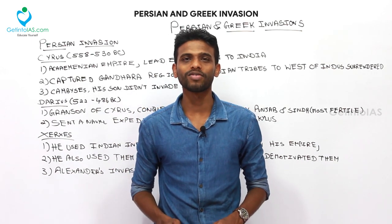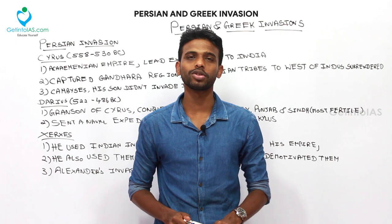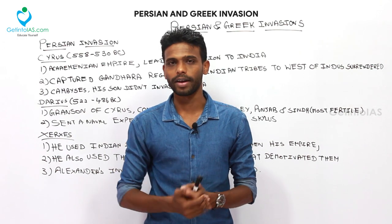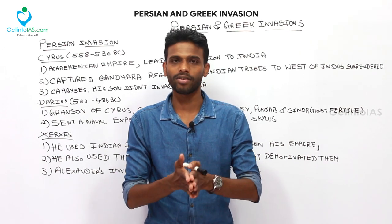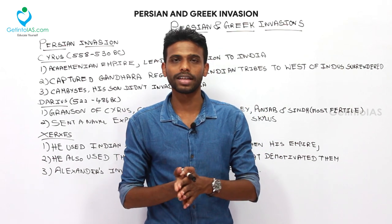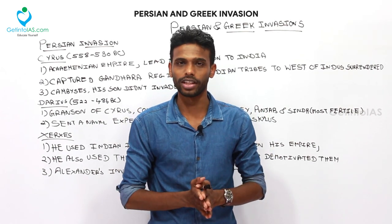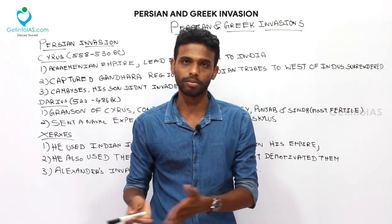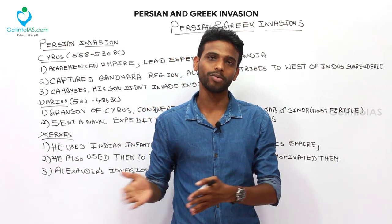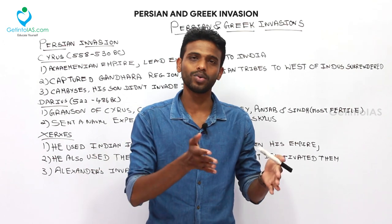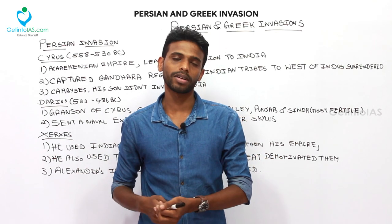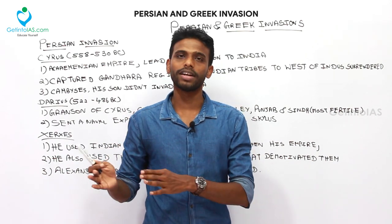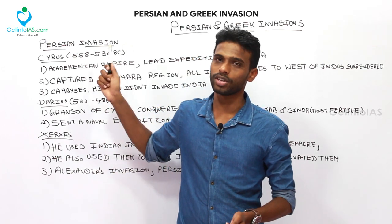Hello friends, I'm Ogun Kumar from Get Into IAS. In this video we are moving on to the Persian and Greek invasions. Till now we were seeing the rise of the Magadha Empire. Starting from Homo erectus and the Stone Age, through the Harappan civilization, the Vedas, the Iron Age, and the emergence of Buddhism and Jainism — and eventually, during the 6th century BC, the Persian and Greek invasions also happened.